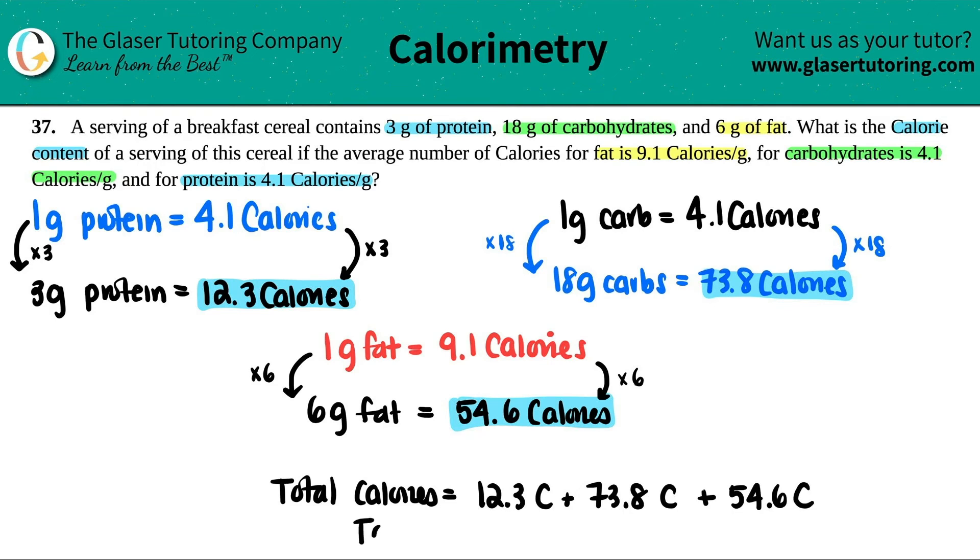So total calories equals the 12.3 calories plus the 73.8 calories plus the 54.6 calories. And then we'll get our answer. So total calories equals 12.3 plus 73.8 plus 54.6. And we get 140.7 calories.